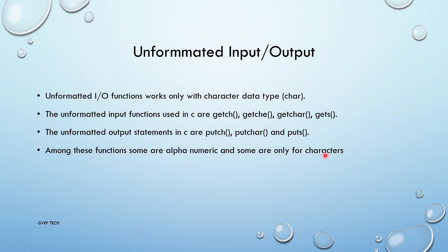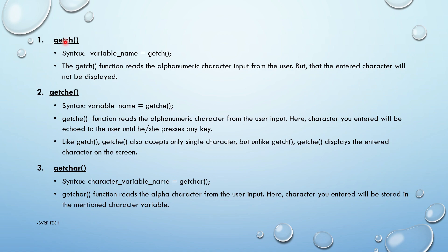First, getch. The syntax of getch is: variable_name = getch(). The getch function reads an alphanumerical character input from the user, but the entered character will not be displayed on the console — it reads silently.